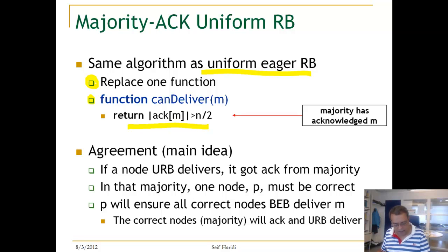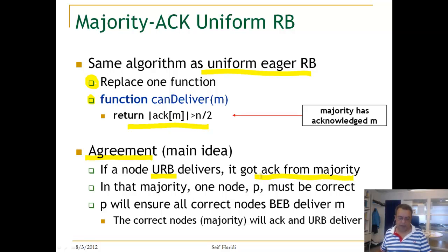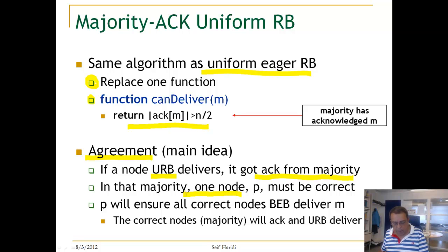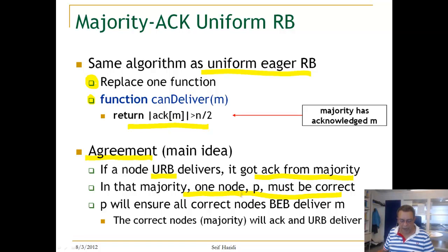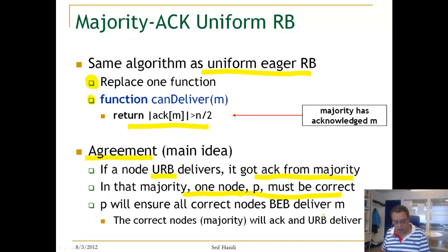Let's see how this works for agreement. If a node uniformly delivers, it means it got a majority. Now going back to the idea of a quorum in the stop-crash model: one node in the quorum intersection must be correct. If one node is correct, it means this node will BEB broadcast to every other node in the system, and because that node is correct, all correct nodes will BEB deliver.